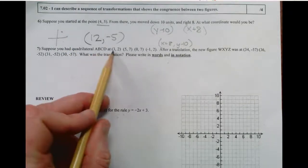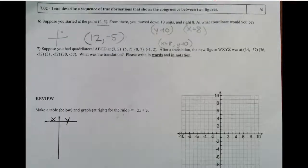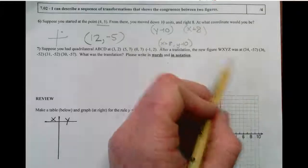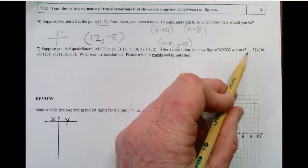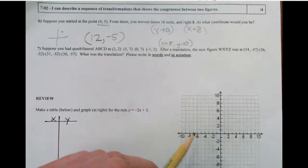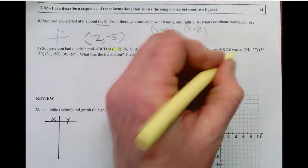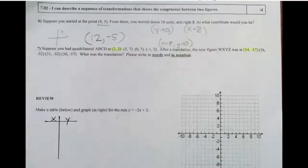Suppose you had this quadrilateral at these points. After a translation, the new figure WXYZ was at these points. What was the translation? So let's pick a point here. Let's look at 4 and 57.